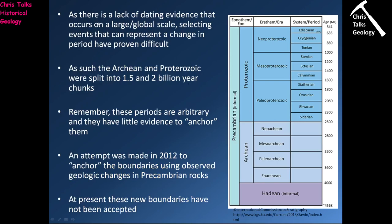These numbers are pretty much arbitrary — they've just been picked. There's a lack of dating evidence on a global scale, making it difficult to select events that can represent a change in period. What you really want is some kind of change across a bedding plane — a change in fossils or rock chemistry — but these Precambrian rocks don't contain fossils and have had quite a long, hard life. So the Archaean and Proterozoic are split into 1.5 and 2 billion year chunks with relatively little evidence to anchor these boundaries.